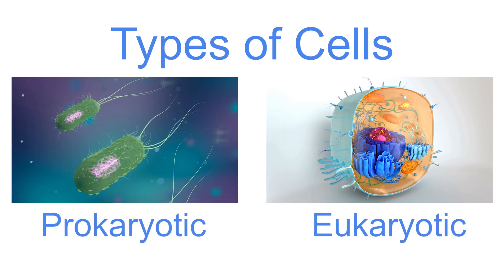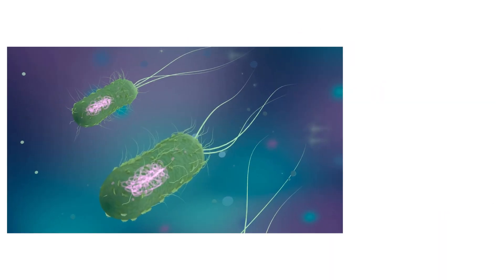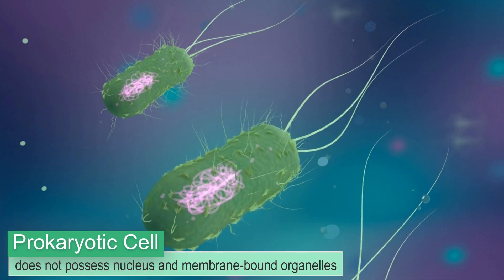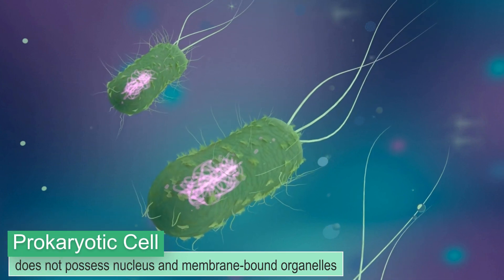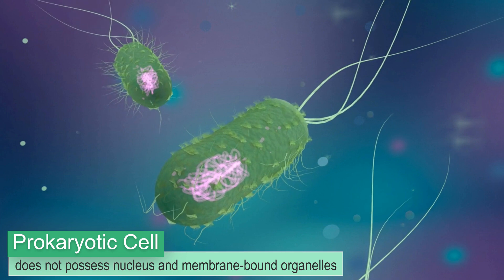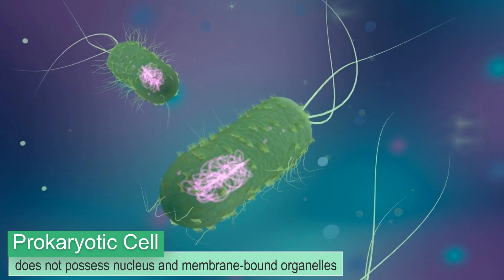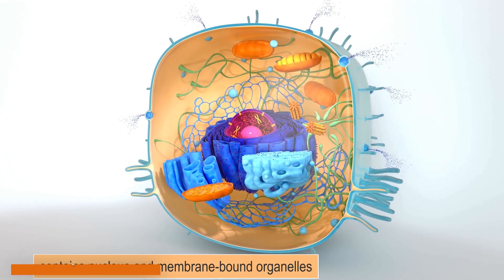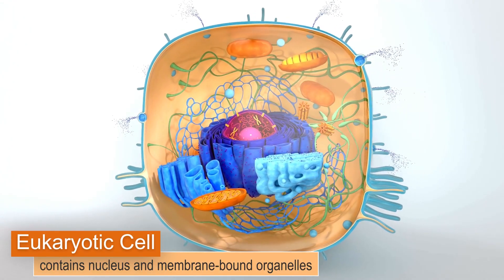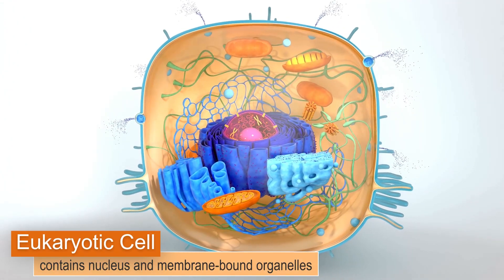Cells are classified as prokaryotic or eukaryotic. Prokaryotic cells, such as bacterium, do not possess a nucleus and membrane-bound organelles. While eukaryotic cells, like plant and animal cells, have both.